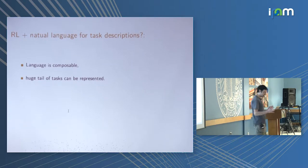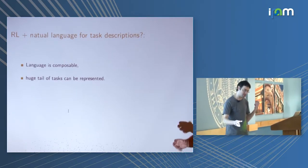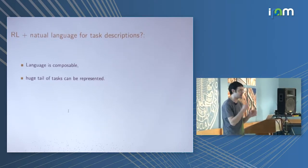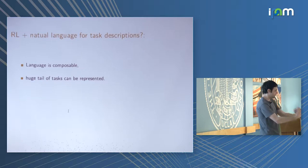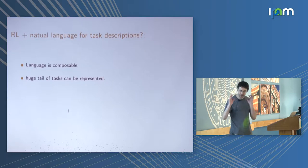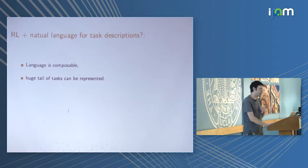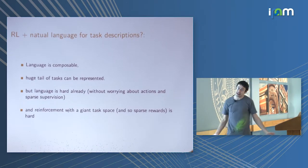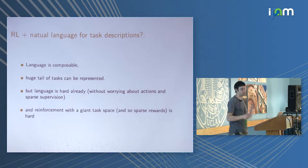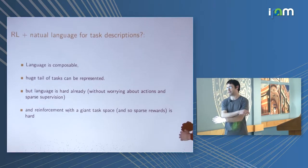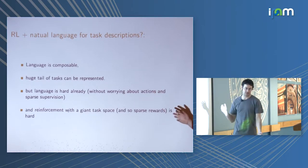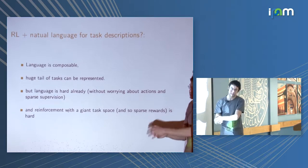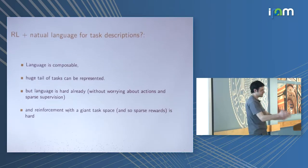A natural 2018 approach is: if you want to go with the flow, you think, well, if you do reinforcement learning and describe your tasks in natural language, maybe you can do something. Language is composable, so you can describe a very large number of tasks. The composability might inform how the agent approaches tasks. But language is already hard, not even counting RL issues. And RL is hard. RL with a giant task space is especially hard. It doesn't seem to be working.